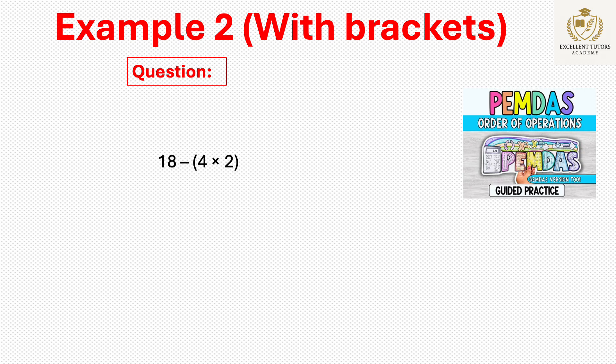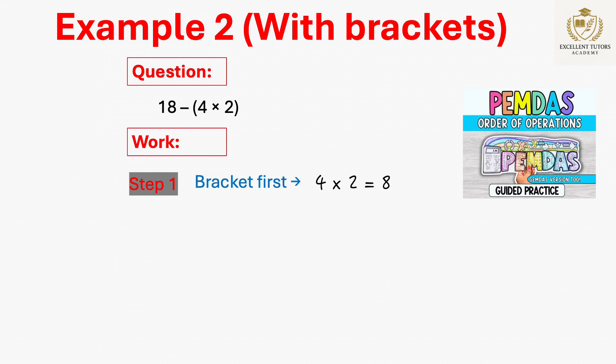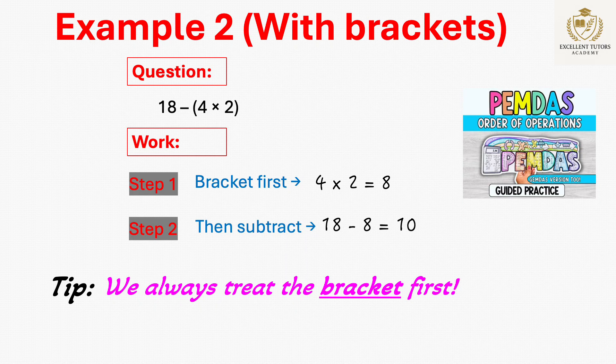Example 2: 18 - (4 × 2). Step 1: Solve the bracket—4 × 2 = 8. Step 2: Subtract 18 - 8 = 10. Don't forget, we always solve what's in the bracket first.